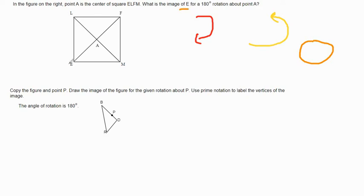So we're starting at point E and the center is A. If we want to go 90 degrees clockwise, that would give us L, and another 90 degrees would give us F, which is 180 degrees. So F would be our answer. Now if the question was what would be 90 degrees counterclockwise, well we would go 90 degrees this way and it would give us M.